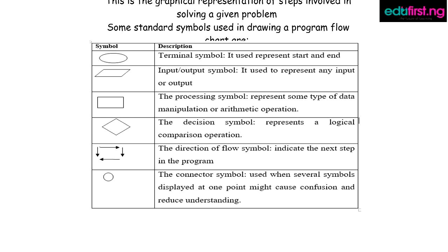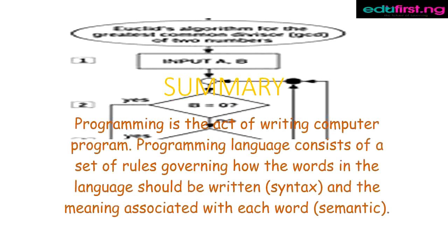We have the decision symbol which represent a logical comparison operation. We have the direction of flow symbol which indicate the next step in the program. We have connector symbol: when several symbols are displayed at one point it might cause confusion and reduce understanding.